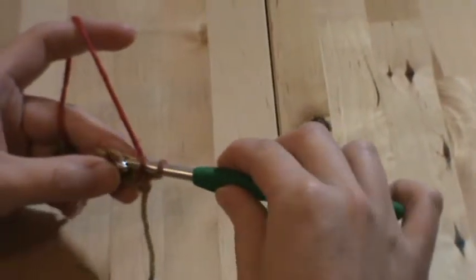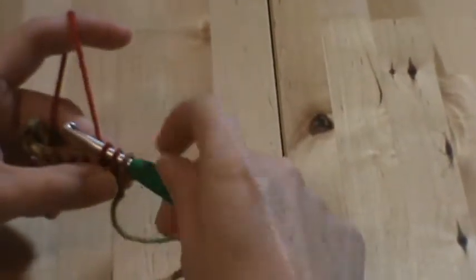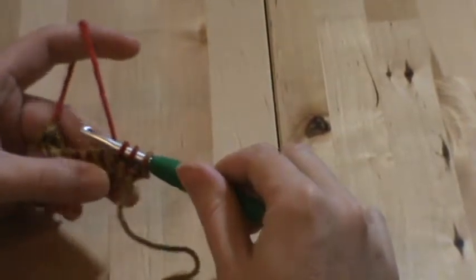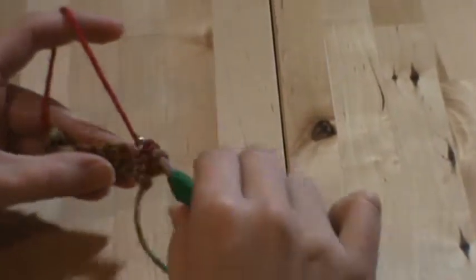You're going to go into the second single crochet, insert your hook, pull up a loop. Now you have three loops on your hook and since we're doing three together you're going to go into the third one.